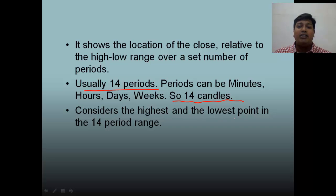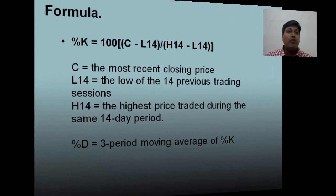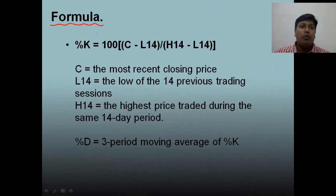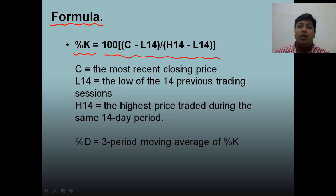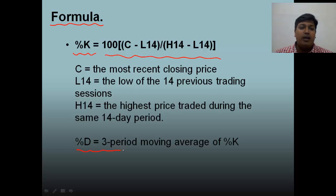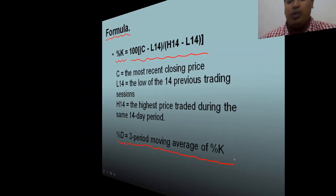It considers the highest and the lowest point in a 14-period range. The formula is: %K = 100 × (C − L14) / (H14 − L14). If you do not understand the formula, that is fine — what is more important is how to trade stochastics. %D is simply the 3-period moving average of %K. That is how simple the formula is.